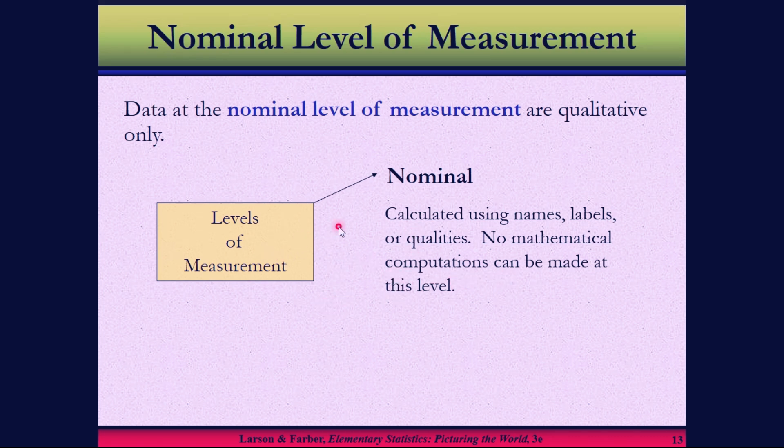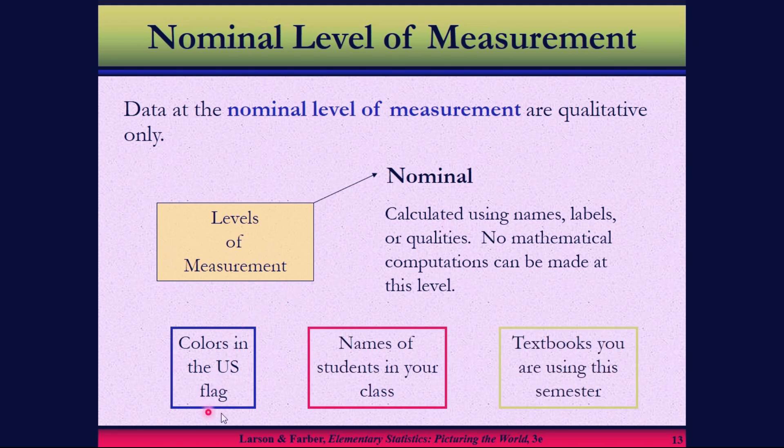Let's say gender. Gender is female or male. When you collect the data for gender, we classify by label - male or female. There's no mathematical computation with nominal level. Another example is color. Such types of variables are also considered as nominal labels.